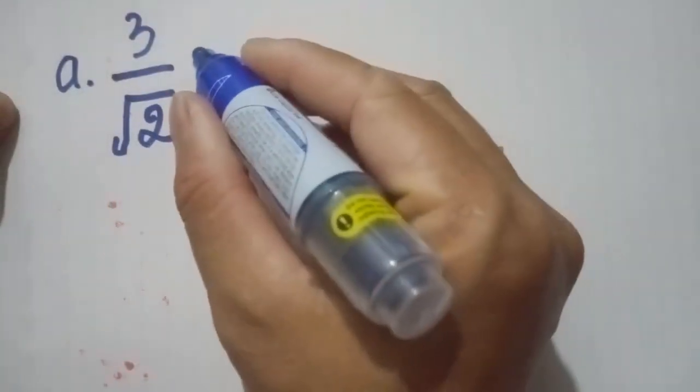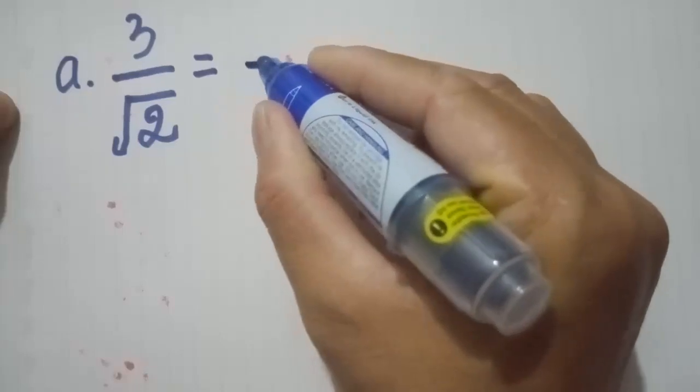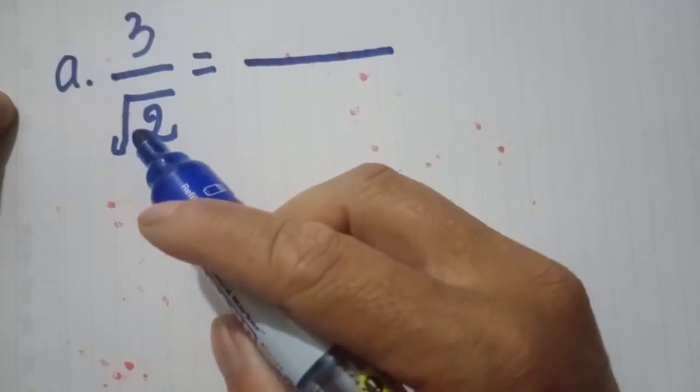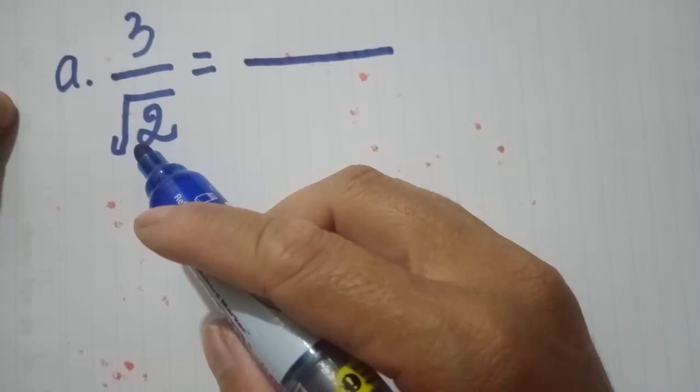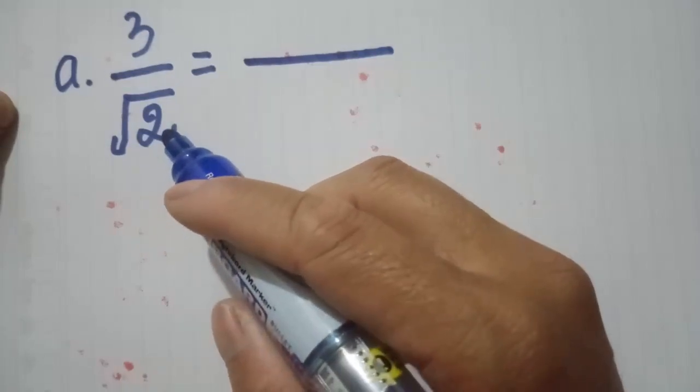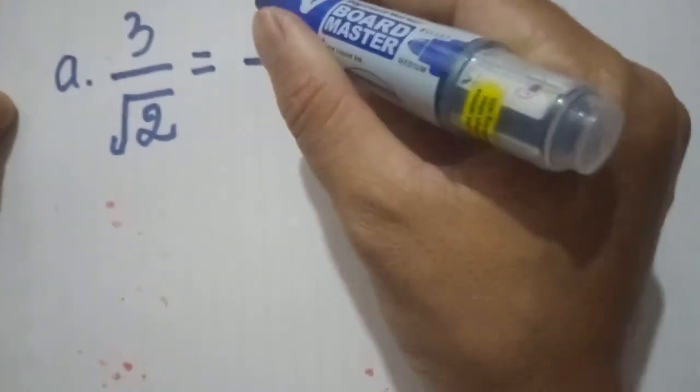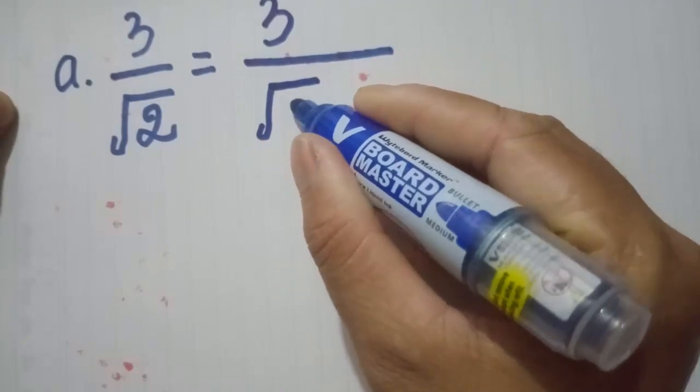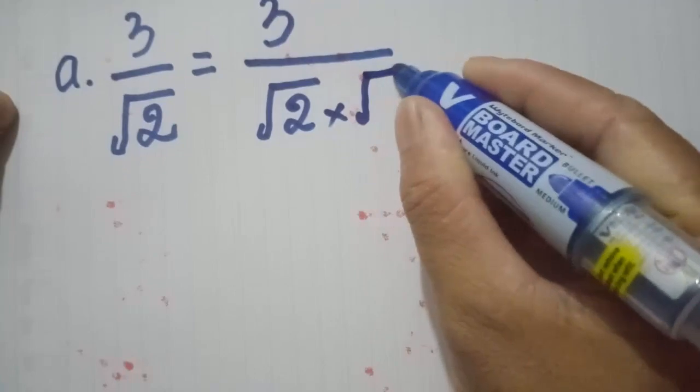Now we need to rationalize. Below we have radical 2, so you need to multiply by radical 2 over radical 2. When we have the same radical, we can add like this.